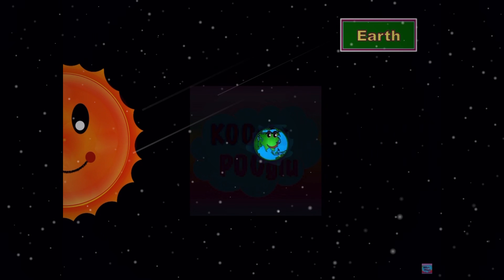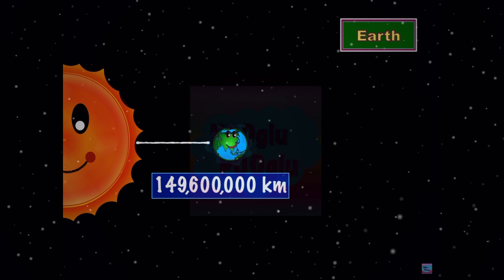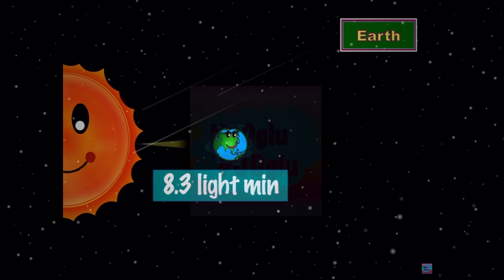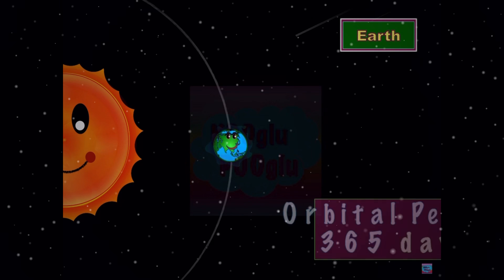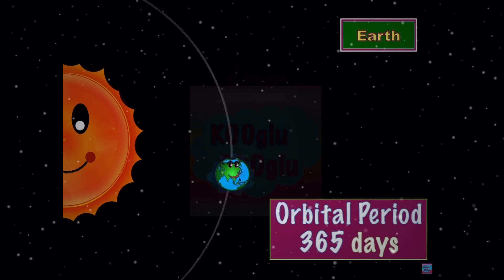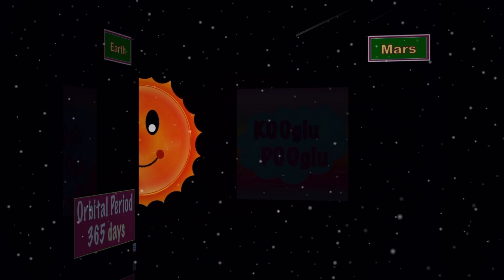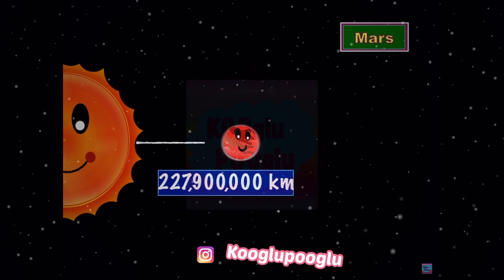Now we have our home planet Earth, which is 150 million kilometers away from the Sun. It's 8.3 light minutes away, and its orbital period is 365 days.